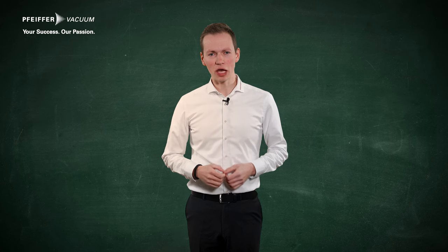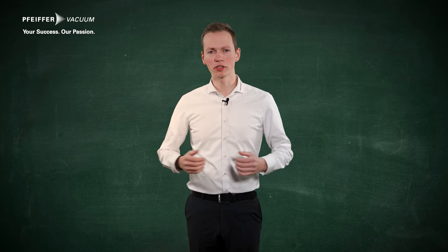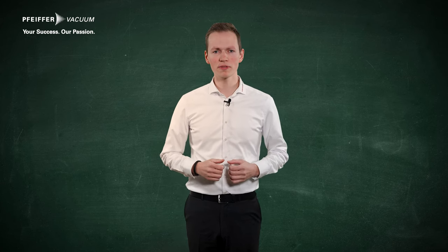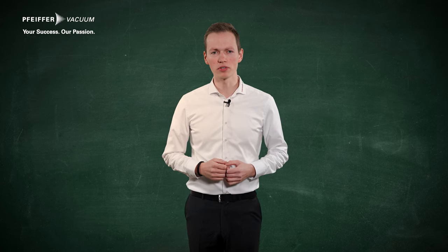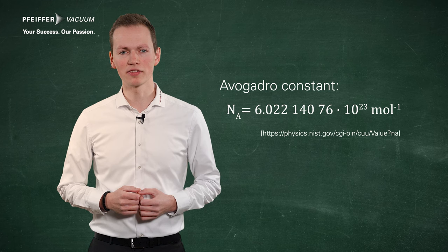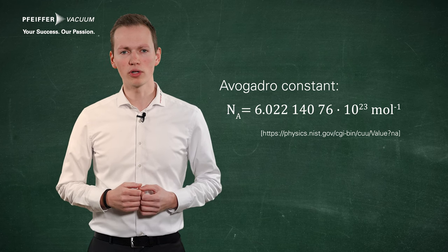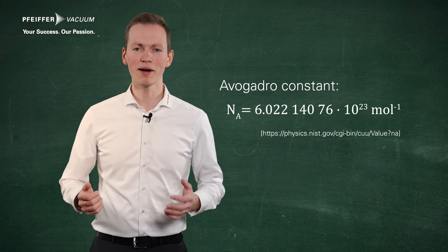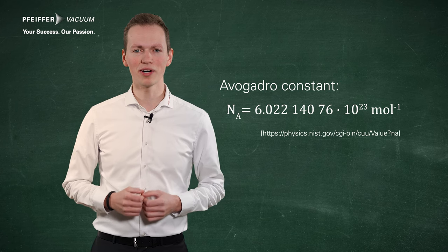Basically, every substance consists of atoms or molecules. The quantity of a substance is given by the definition in moles. One mole of a substance contains a defined number of particles. This value is also called the Avogadro constant, named after the Italian physicist Amedeo Avogadro.